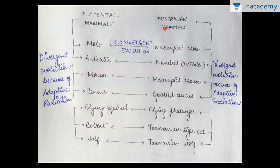We see convergent evolution between placental mammals and Australian marsupials: mole to marsupial mole, anteater to numbat, mouse to marsupial mouse, lemur to spotted cuscus, flying squirrel to flying phalanger, bobcat to Tasmanian tiger cat, and wolf to Tasmanian wolf. Divergent evolution through adaptive radiation in different habitats leads to convergent evolution.